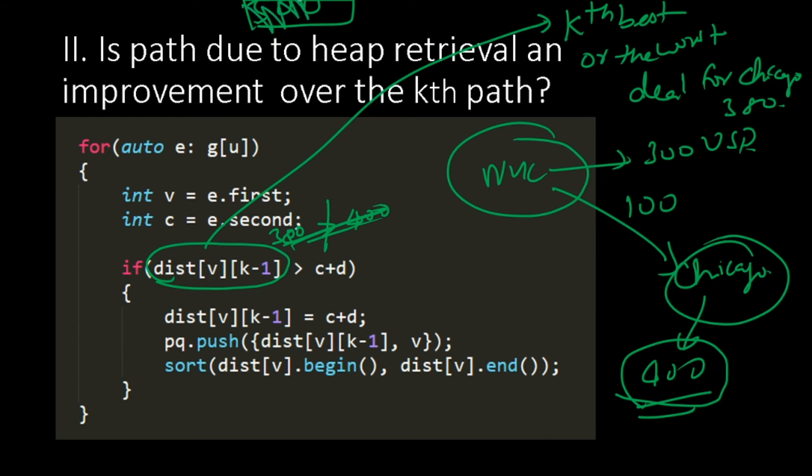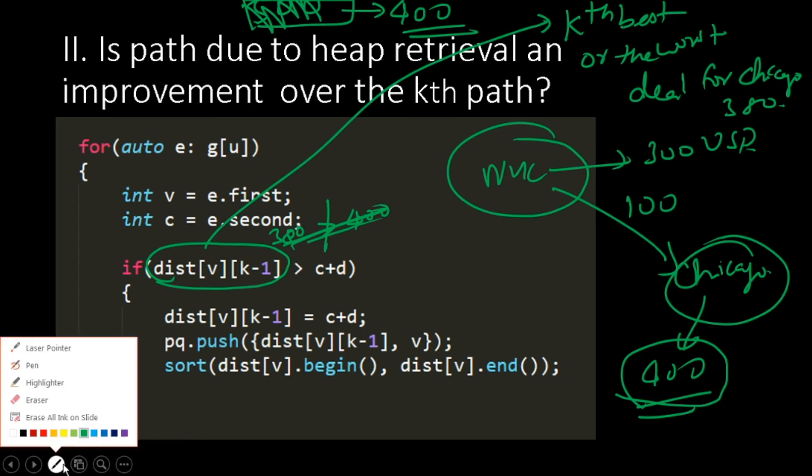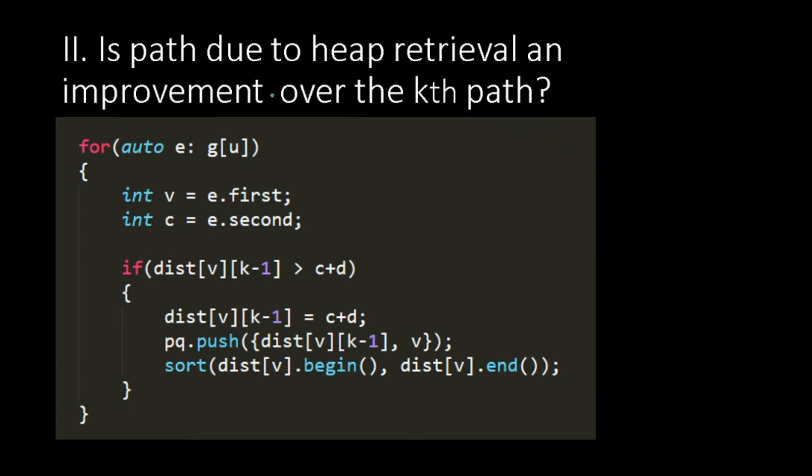But if the kth best deal is $500 and our deal is $400. So what do we do? We rewrite this $500 to $400. So we replace the kth deal, we replace the kth deal by present deal and we will sort.